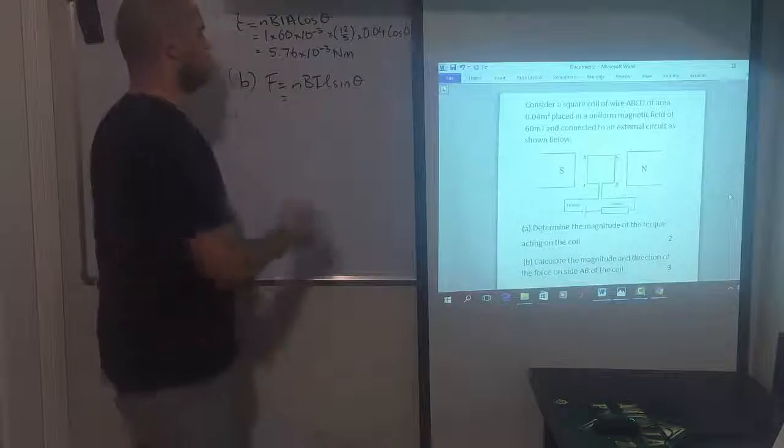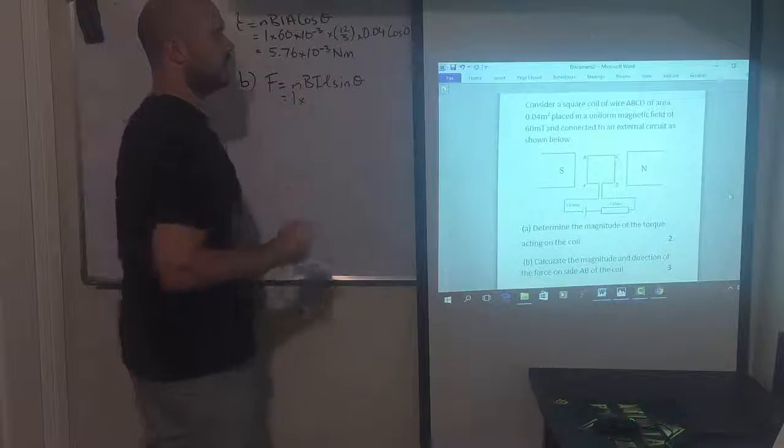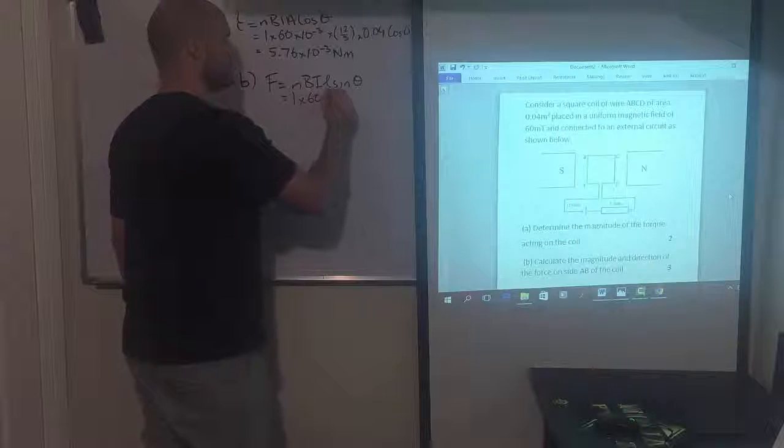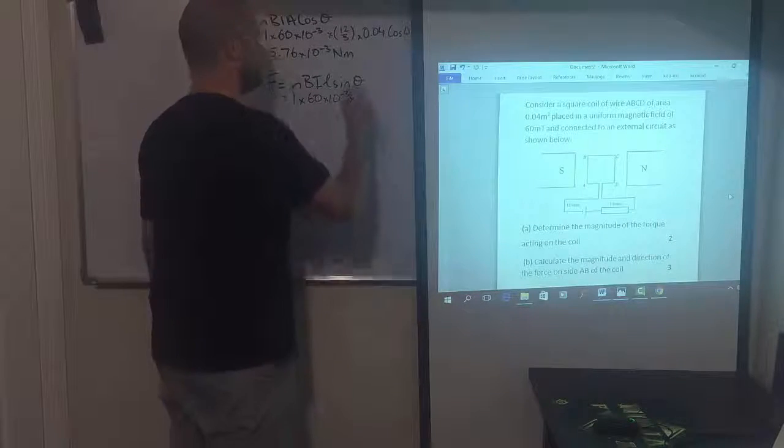So again, our N, no information about it, assume it's 1. Our B is 60 millitesla, 60 times 10 to the minus 3. Our current is 12 on 5.